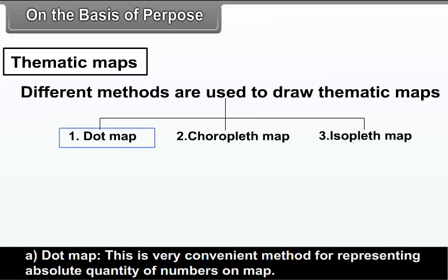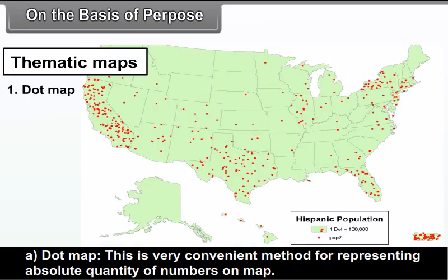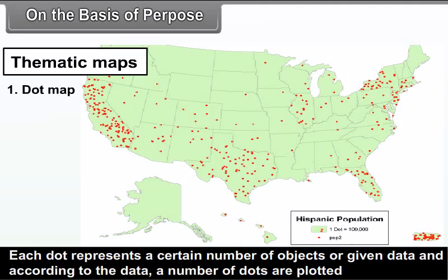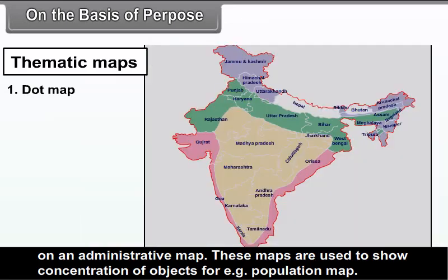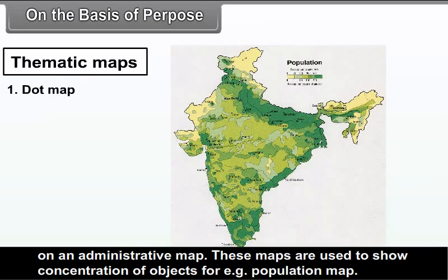Dot Map: This is a very convenient method for representing absolute quantity or numbers on a map. Each dot represents a certain number of objects or given data, and according to the data, a number of dots are plotted on an administrative map. These maps are used to show the concentration of objects — for example, a population map.